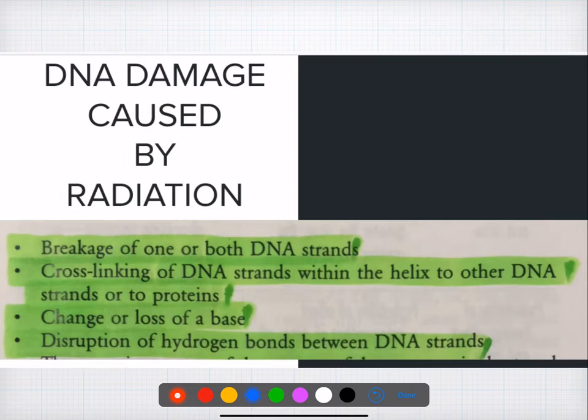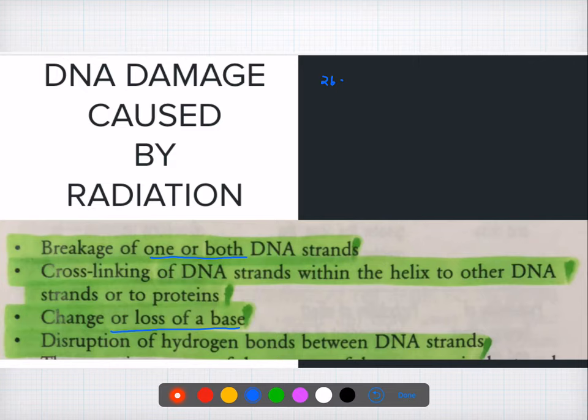Question twenty-six: which things in the cells are most susceptible to radiation? The answer is nucleic acid — specifically DNA. Radiation damage to DNA includes: break of one or both strands of the DNA, cross-linking of the DNA strand within the helix, loss of the bases present in the DNA, and disturbance of the hydrogen bond between the two strands.